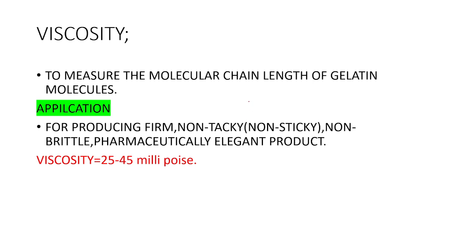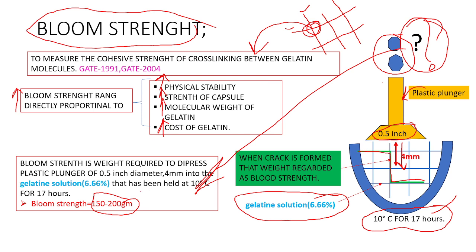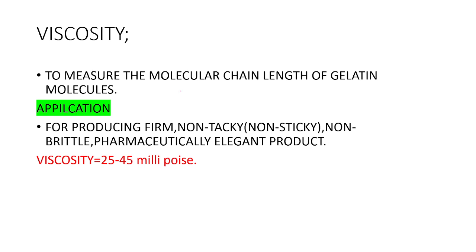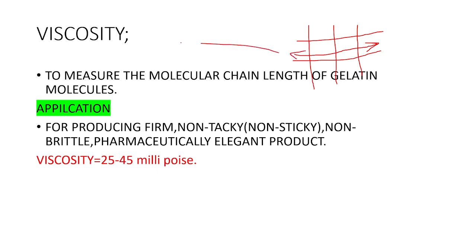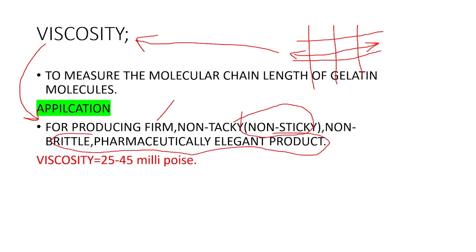The ideal bloom strength range is 150 to 200 grams. The next property of gelatin is viscosity. Viscosity is measured to determine the chain length of the gelatin molecule. The application of viscosity is for producing a non-sticky, non-brittle, pharmaceutically elegant film product. The ideal viscosity for the gelatin molecule is 25 to 45 millipoise.